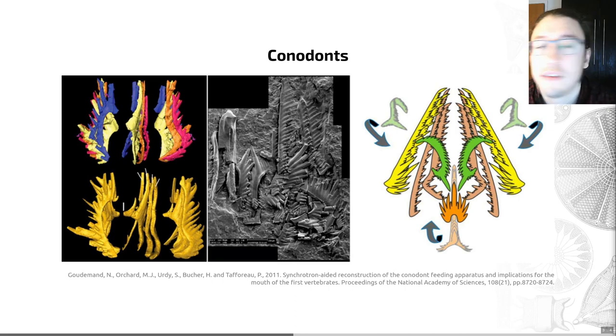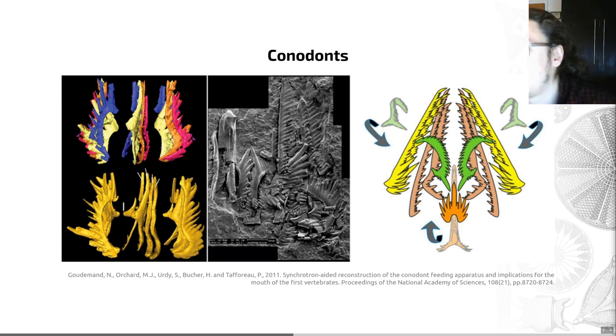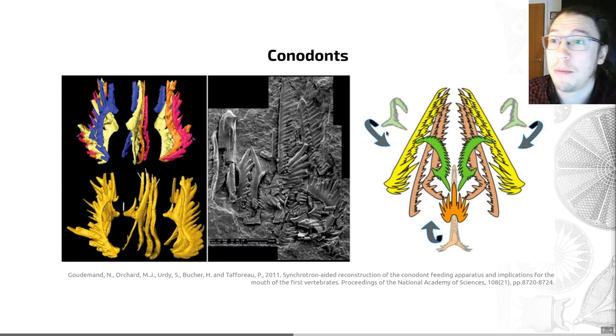They're found in individual bits called elements that are commonly 0.25 to 2 millimeters in length, and you can see some examples of elements on this slide here. Here are some revealed through CT scanning, probably in something close to their life position. Here in the middle is what they typically look like in a rock. These ones are resolved with the use of a scanning electron microscope and they're a bit smashed up and flattened, and this is a 3D reconstruction of how these elements may have interacted with each other in life.